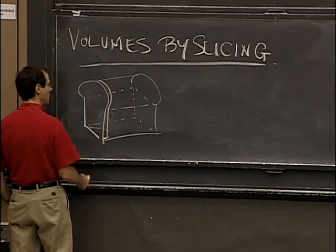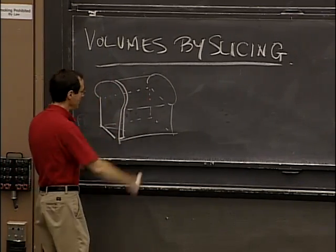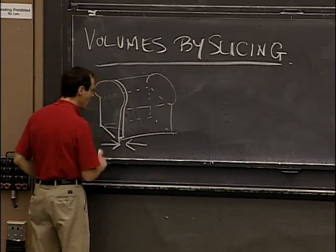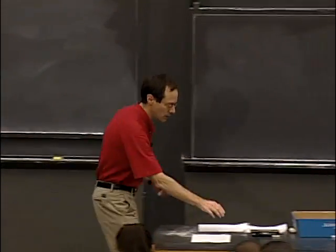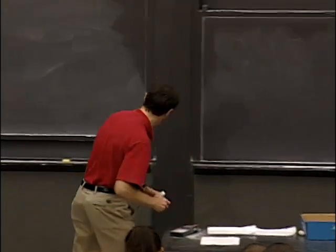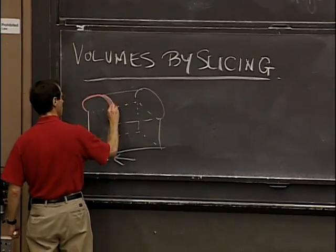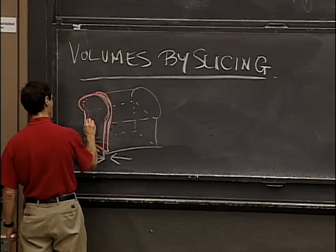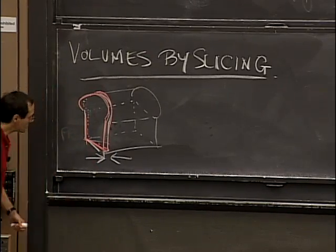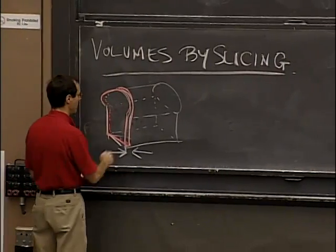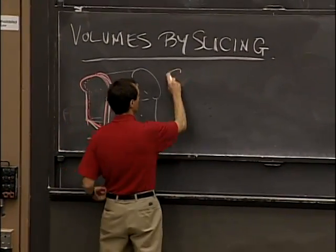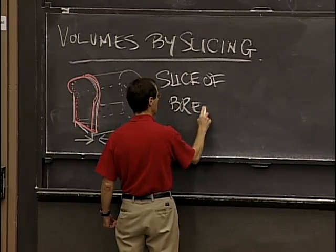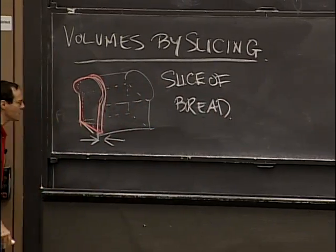Bread is often sliced like this — there are even machines to do it. I'll draw the slice with a little bit of a more colorful decoration. Here's our red slice of bread, coming around like this and back down behind. Here's our bread slice.